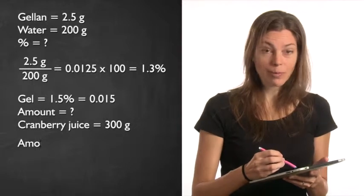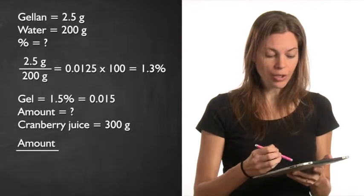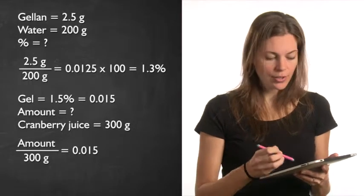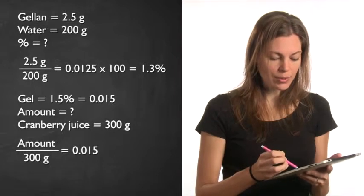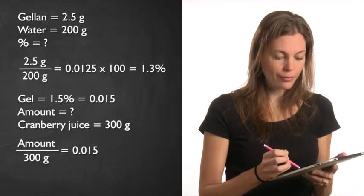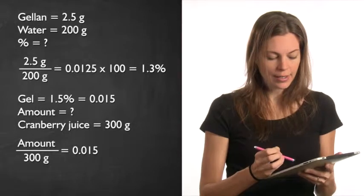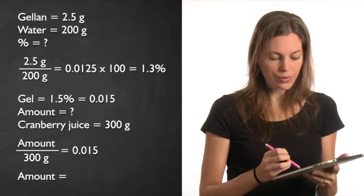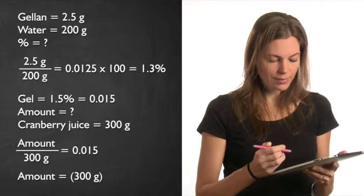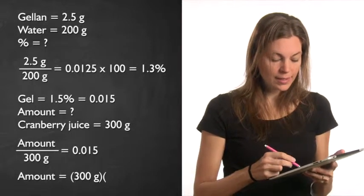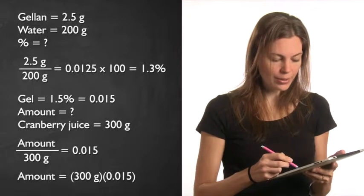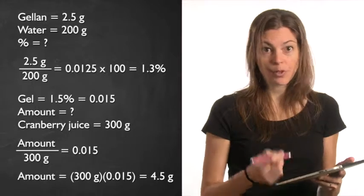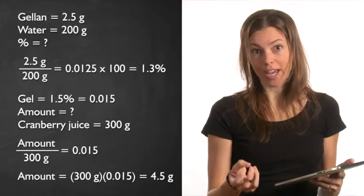We know that whatever amount we put in over 300 grams is going to equal this percentage, so we've put this equal to 0.015. Then we solve for the amount we don't know. This equals 300 grams times 0.015 equals 4.5 grams. That's how much agar-agar you would have to add to make this gel.